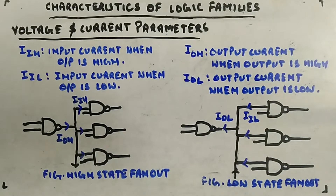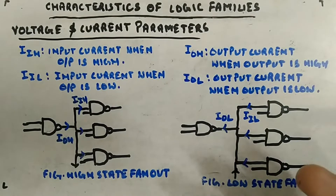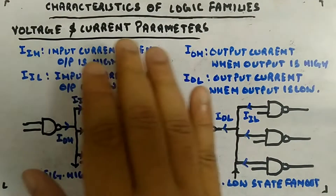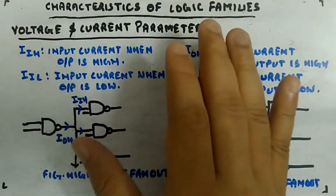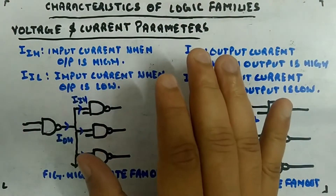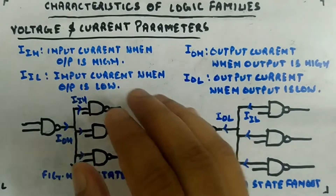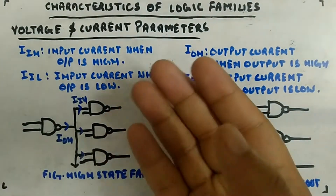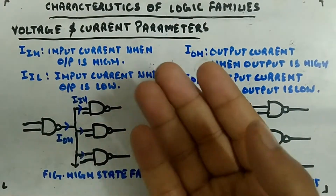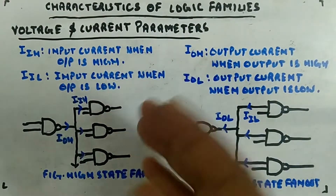Now let's look at current and voltage parameters and where they will be used. Voltage and current parameters are not characteristics of logic families themselves — they are parameters that will be used in some of the characteristics.